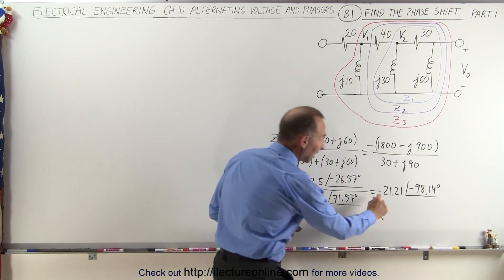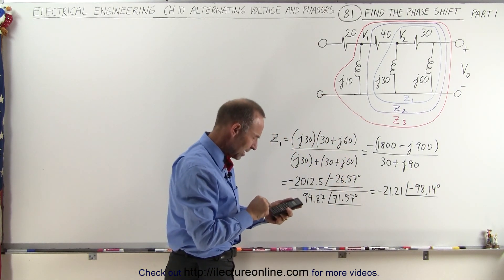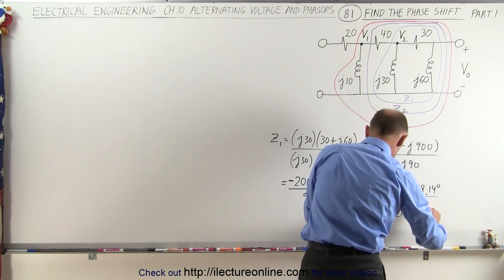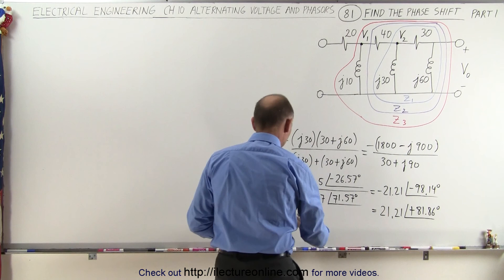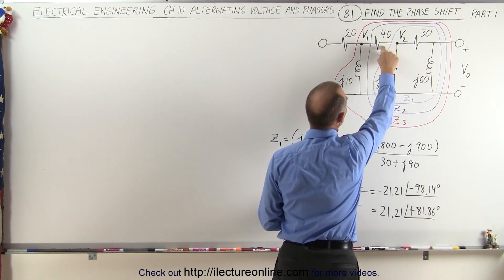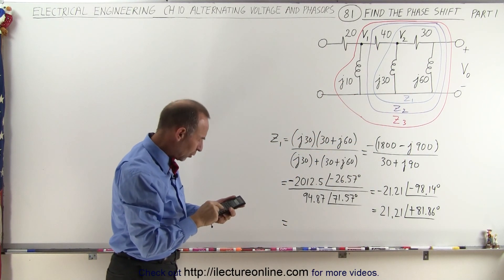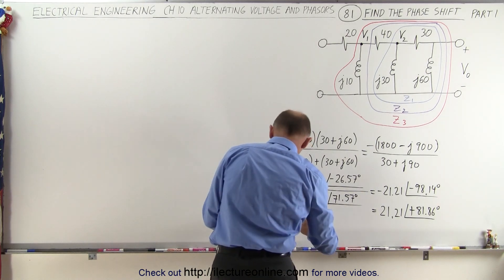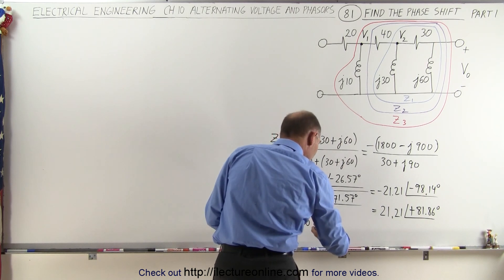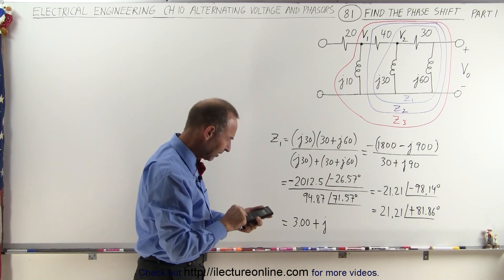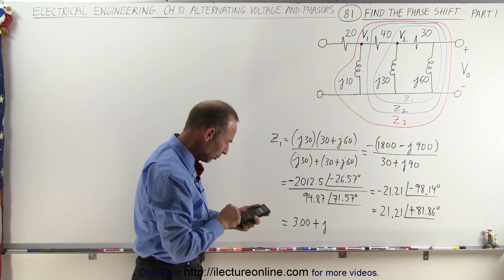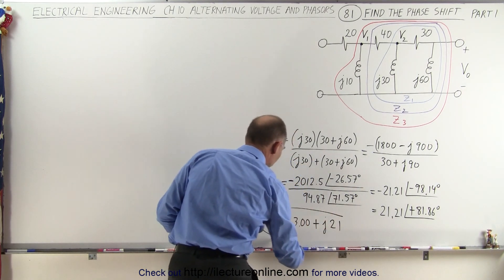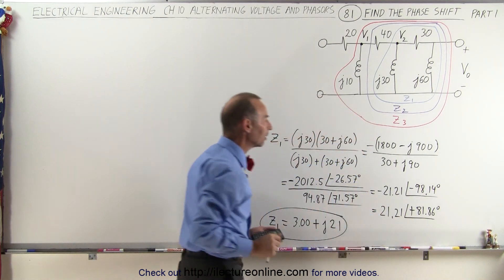And finally, to get rid of this negative sign right here, we're simply going to add 180 degrees to the phase angle, so plus 180, that gets rid of the negative, so this can be written as 21.21 with a phase angle of a positive plus 81.86 degrees. So now we're going to convert that into real imaginary part, because then we're going to have to add it to the 40 ohm resistor to get Z2. So take the cosine of that and multiply that times 21.21, that gives us 3, exactly, that's kind of nice, 3.00, plus J, 81.86, take the sine of that and multiply it times 21.21, that gives us exactly 21. So this is Z1, Z1 expressed in terms of the real imaginary part or in terms of the magnitude and phase angle part.